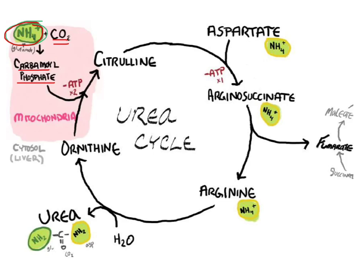I won't go through every enzyme or the entire urea cycle — I don't think that's going to be very productive. I just want to point out one other thing. Check out our aspartate, which was produced from an aminotransferase reaction from the glutamate that came from alanine. This aspartate is going to donate our second NH4 amino group to urea. Remember that urea has two amino groups on it — the first one coming in the mitochondria, the second one coming in the cytosol.